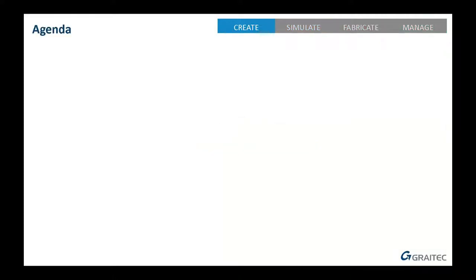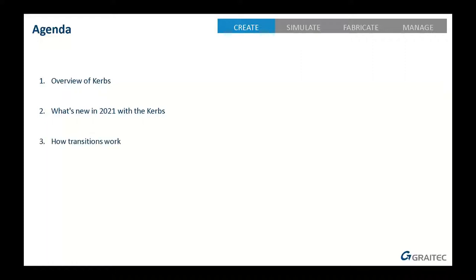So the agenda for today: in this webinar I'm going to give an overview of curbs in the country kit - a brief history of what's in the country kit in terms of curbs - then we'll look specifically at what's new in 2021 with the curbs. We also have transition curbs now, so I'll show you how they work. Then we'll open up the software and do some things like drop curbs, cycle lanes, and stuff like that.